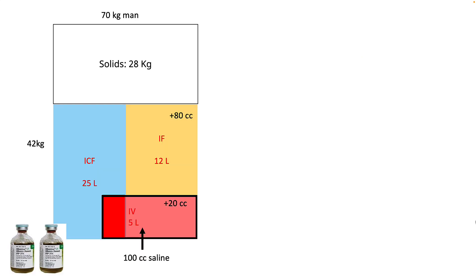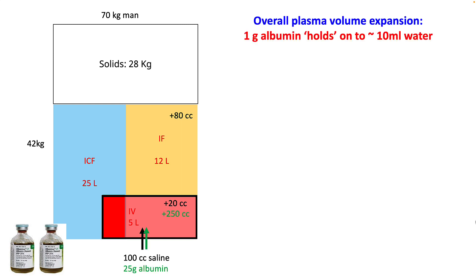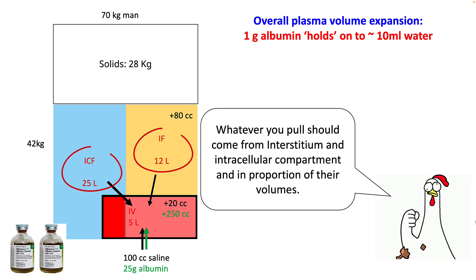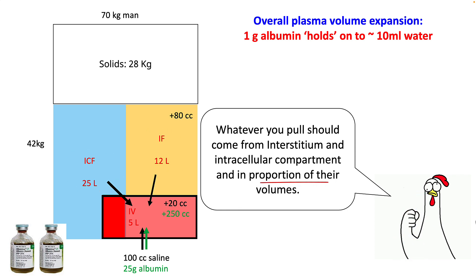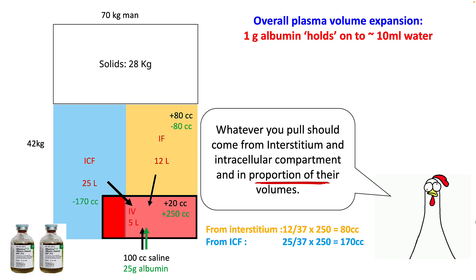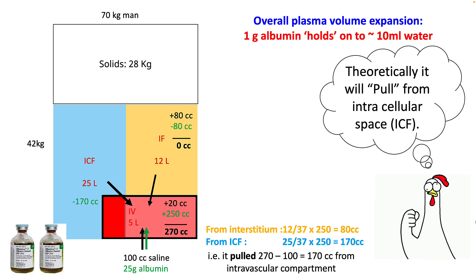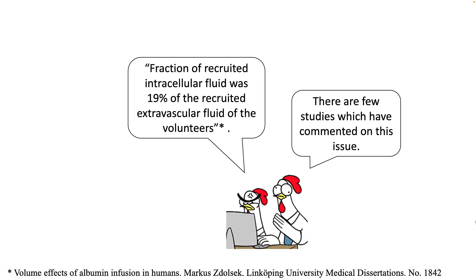Another concept to remember is that when you give 25 grams of albumin, theoretically it should pull around 250 cc of plasma. However, this pull is going to come from both the interstitium and the intracellular fluid compartment in proportion to their volumes. So from the interstitium you will pull 80 cc out of the 250, while from the intracellular compartment you will be pulling around 170 cc. So mostly when you give 25%, you pull more from the intracellular compared to the interstitial portion. Some studies have reported that around 90 to 20 percent of the recruited extravascular fluid actually comes from the intracellular compartment.